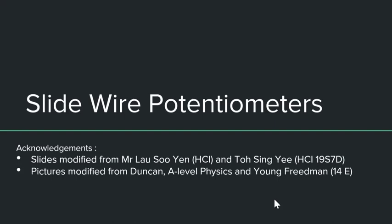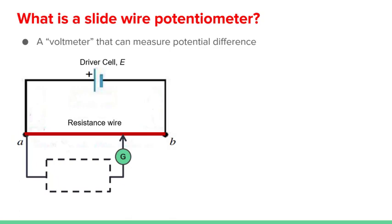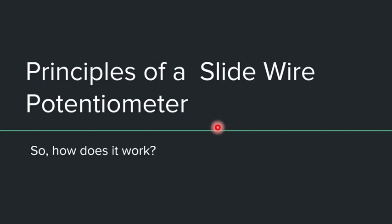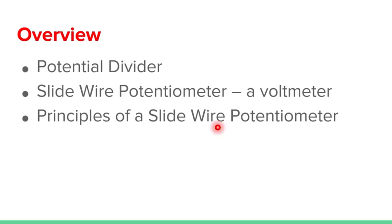For this video today, we want to introduce the principles of a slide-wire potentiometer. A potentiometer is essentially a device to measure potential differences. Since it is often a challenging topic, we'll spend a little more time developing this idea — starting with the potential divider, then exploring when a slide-wire potentiometer can be used as a voltmeter, and finally consolidating its principles.